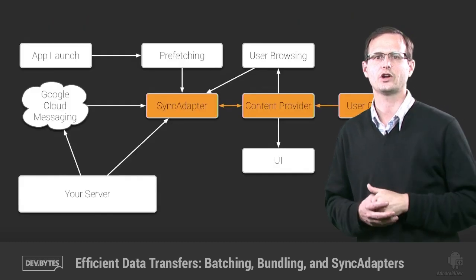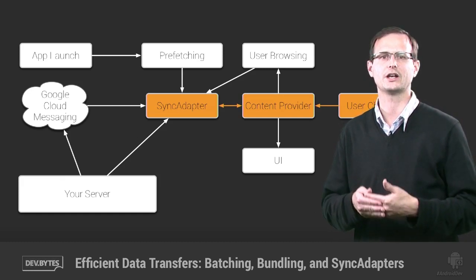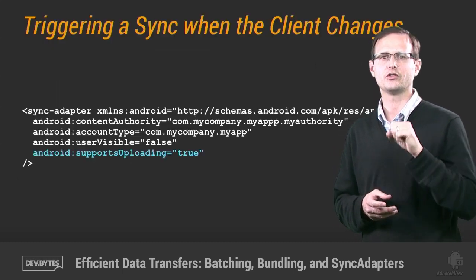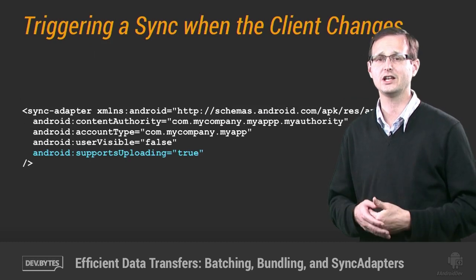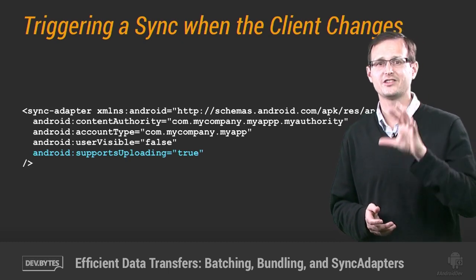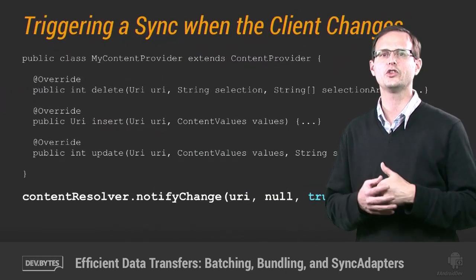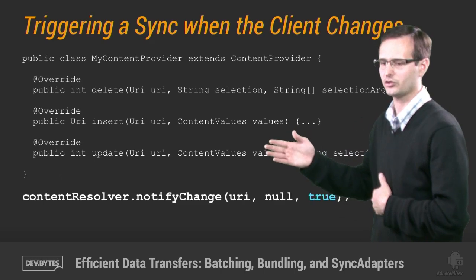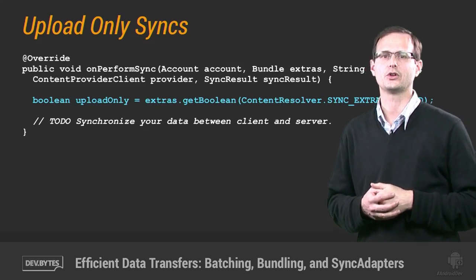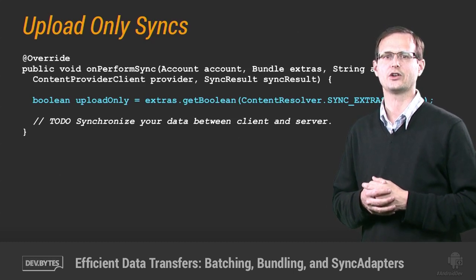Conversely, you may want to synchronize changes on the client-side to the cloud. This could be anything from analytics data to new email, so you want to be careful when deciding which changes are sufficient to initiate an actual transfer. If you're using content providers, you can configure your sync adapter to trigger whenever the content provider changes by setting the supportsUploading attribute to true, which happens to be the default. When this is set, an upload-only sync will be requested whenever your content provider executes a notifyChange call with the syncToNetwork parameter set to true, as shown here. Within the onPerformSync handler, you can detect these upload-only syncs by examining the sync extras UPLOAD extra, which can be useful if you want to rate limit client-initiated transfers.